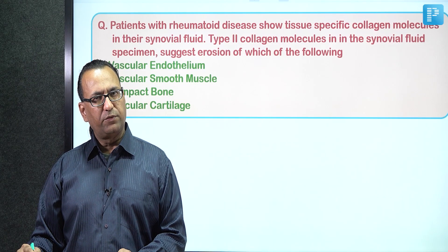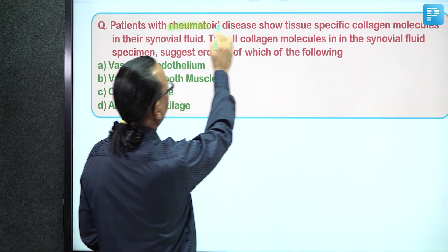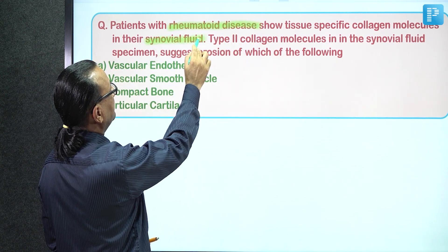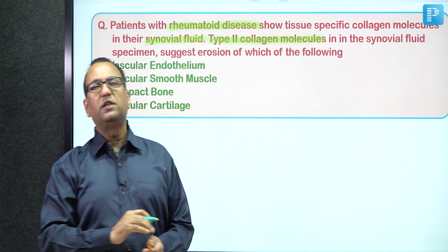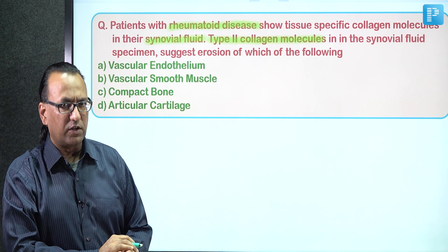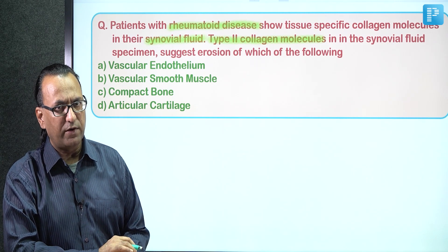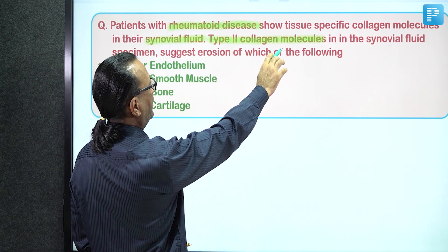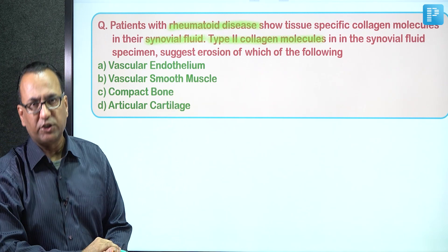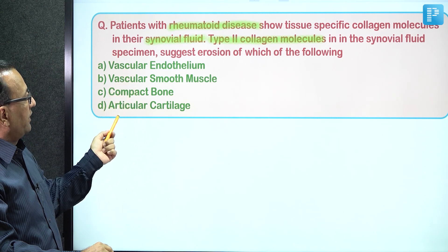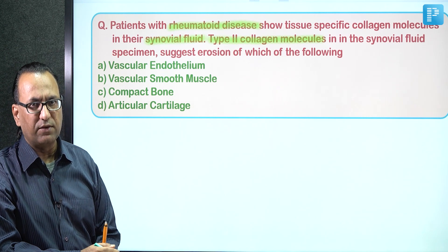We have a patient of rheumatoid arthritis, and from the synovial fluid specimen taken, we found type 2 collagen molecules. During pathological conditions like rheumatoid arthritis and osteoarthritis, degenerative changes can cause collagen from tissues to move into the synovial fluid. The question asks which structure containing type 2 collagen was responsible - vascular endothelium, smooth muscles, articular cartilage, or bone tissue.